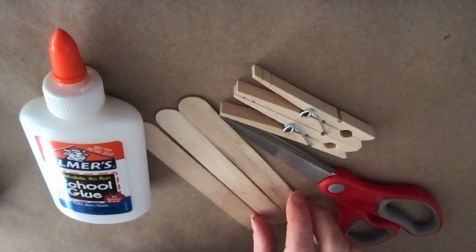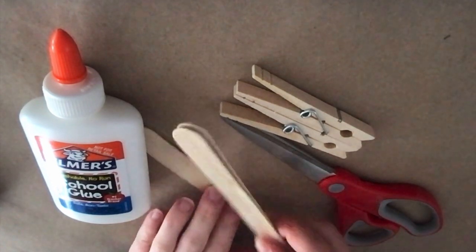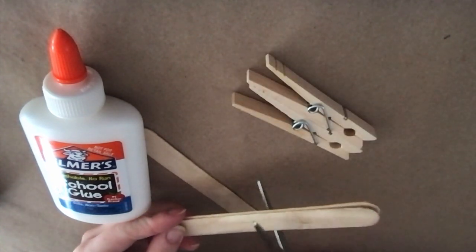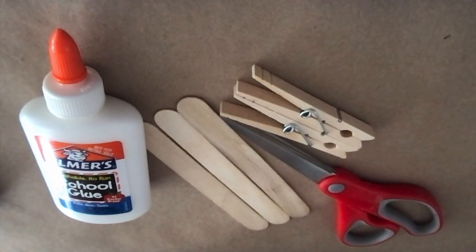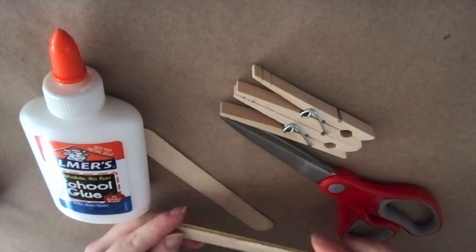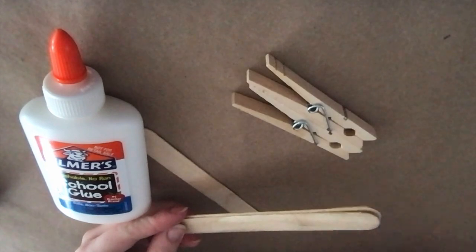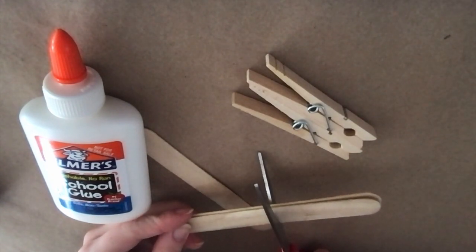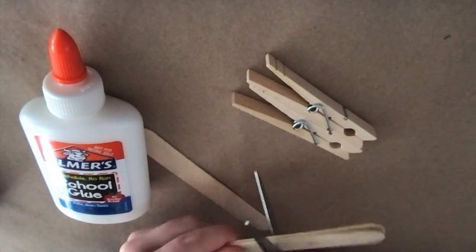Our first step is taking two of our three popsicle sticks and cutting them down to size. We want to cut them so they're about three inches long.